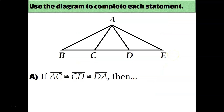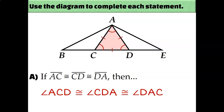Let's use these ideas to determine what else must be congruent about a figure. For example, if sides AC, CD, and DA are all congruent to each other, I'm focusing on the triangle in the center of the diagram. Since it has three congruent sides, it's equilateral, and equilateral triangles are always equiangular. So angle ACD is congruent to angle CDA, which is congruent to angle DAC.